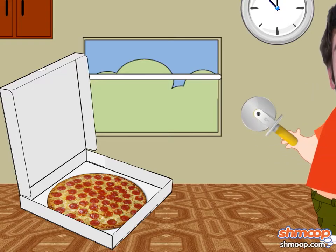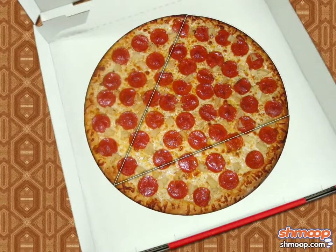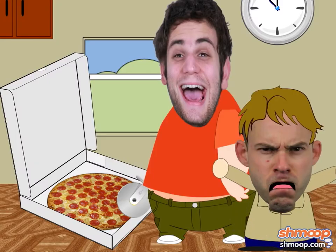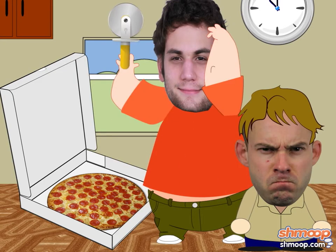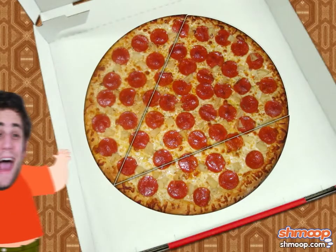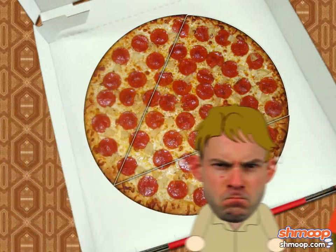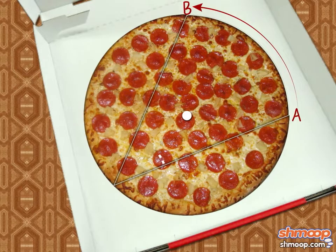Your friend, wise guy Louie, is in charge of cutting the first slice. And just to make things difficult, he cuts it like this. Wise guy Louie, you all exclaim. What, he says. I did just what you told me. As infuriating as he is, wise guy Louie is right. Arc AB, which is indeed intercepted by the angle he cut, still has a measure of 90 degrees.